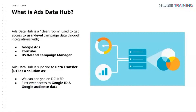It allows us to query user-level data from our ad impressions and clicks in a privacy-safe way. It contains Google Ads data, YouTube data, DV360 Campaign Manager data, and by virtue of having Campaign Manager, we've got Search Ads data in there as well. In addition, we can bring in our first-party data — our website and CRM data — and join it all up.